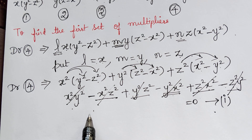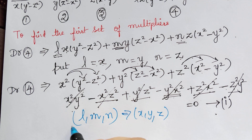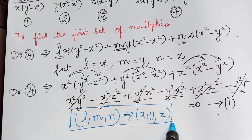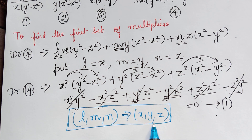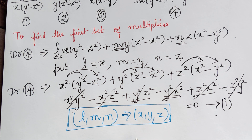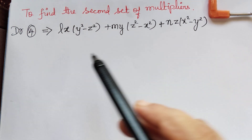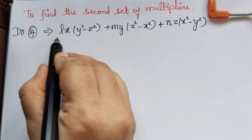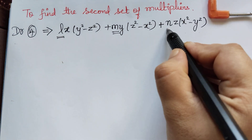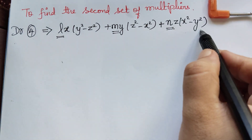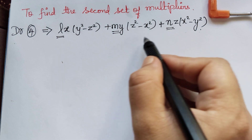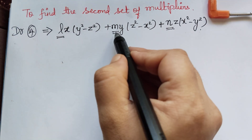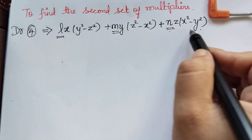Therefore, if we choose multipliers L = x, M = y, N = z, the denominator becomes zero. So the first set of multipliers is (x, y, z). In a similar way, let us now find the second set of multipliers. Again we write the denominator and choose another set of values for L, M, and N to make it zero — different from the first set (x, y, z).